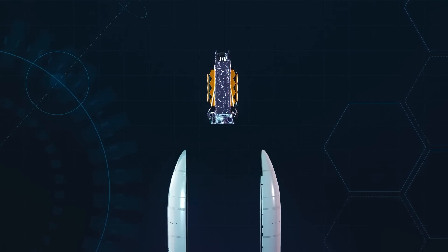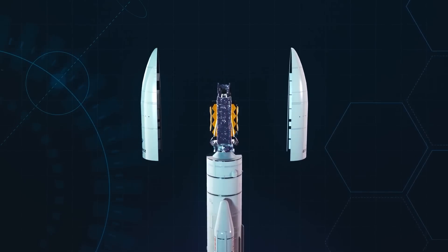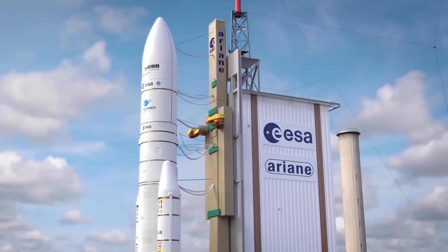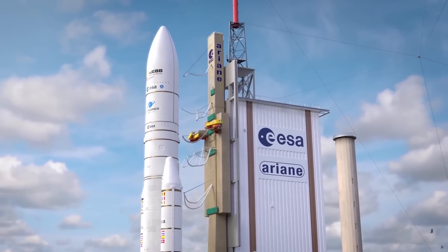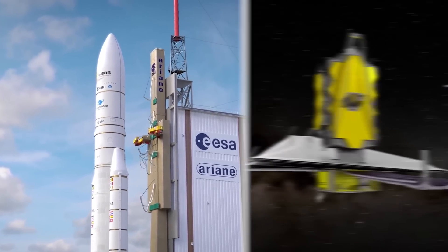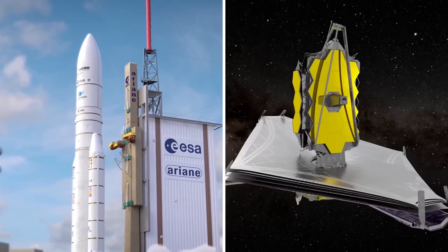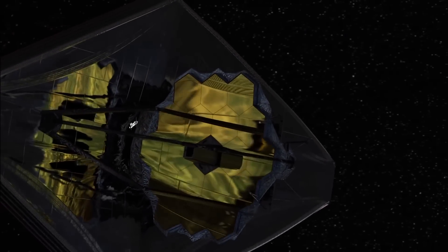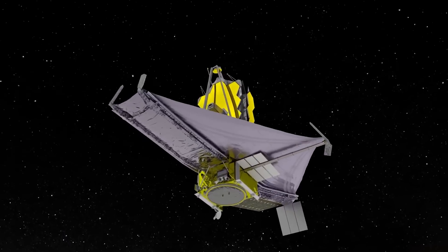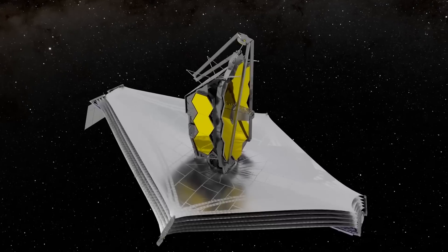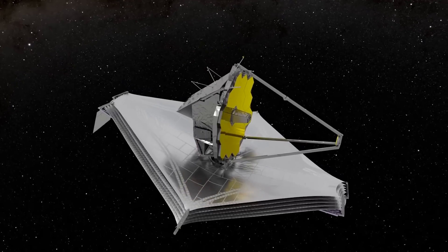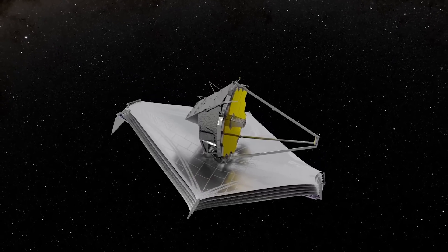For example, the engineers risked ruining the JWST's launch by folding it up atop the rocket. There was no other way, actually, as there was no rocket capable of launching the telescope at its original size when it was conceptualized. The heat shield, for instance, is so large that you can place a standard tennis court on it, so the engineers had to design a complex folding and unfolding mechanism for it. With so many intricate moving parts, these engineers were just begging for something to go wrong.